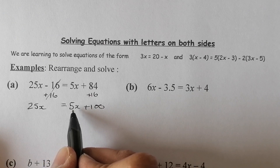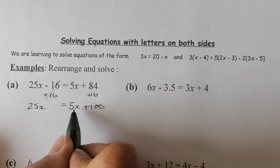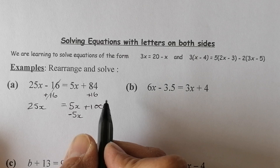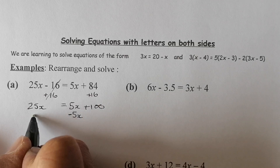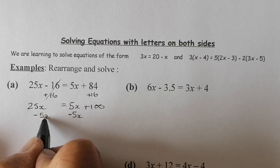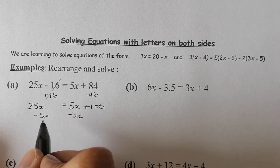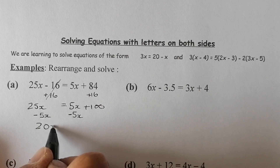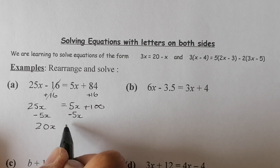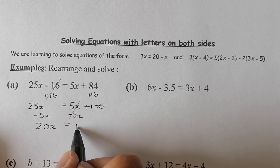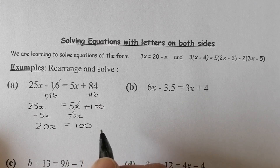I don't want the 5x on the right-hand side — I want it on the left. So I'm going to subtract 5x from the right-hand side, and I must do the same to the left. 25 take away 5 gives me 20, leaving 20x on the left-hand side. These cancel out and leave me with 100 on the right.